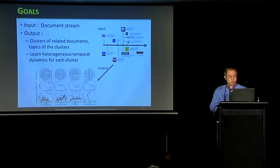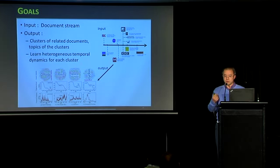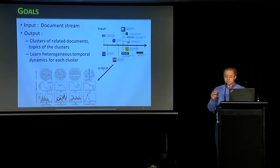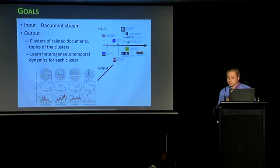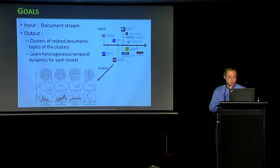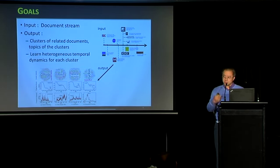The goal is: we have these document streams arriving in time, and we want to leverage two sources of information — first, text information; second, temporal timestamps — to cluster documents, extract topics from these clusters, and learn potentially very different temporal dynamics for different clusters. For each of these two topics, clustering documents and learning temporal dynamics, people have studied them separately.